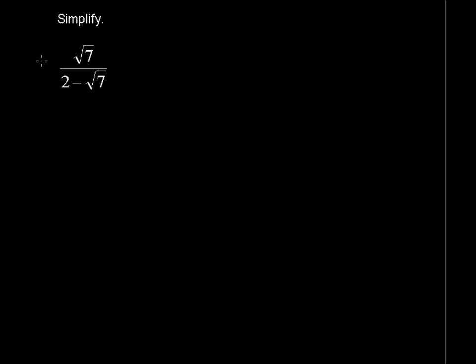Simplify the square root of 7 over 2 minus the square root of 7. We know that we want to rationalize the denominator. That means to get rid of the radical sign in the denominator.